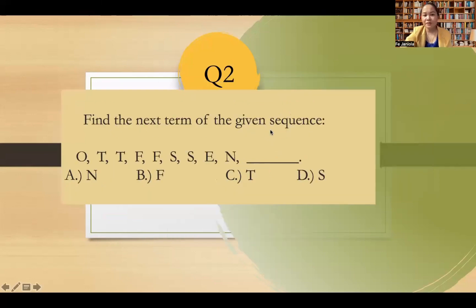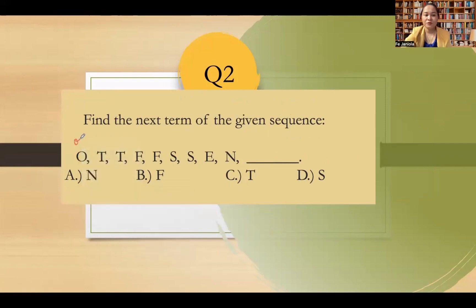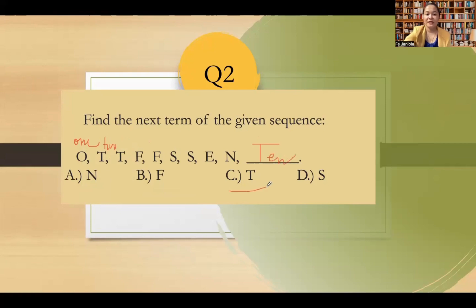Next: find the next term of the given sequence O, T, T, F, F, S, S, E, N. The pattern here is the first letter of each number word: One, Two, Three, Four, Five, Six, Seven, Eight, Nine. So the next term is T for the word Ten. The answer is letter C.